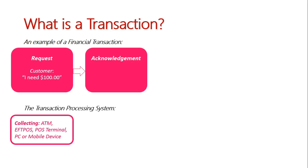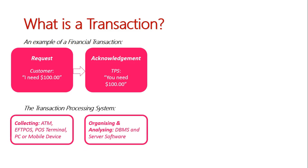This request needs to be acknowledged, and the TPS will basically say back to the customer, "You need $100, right?" It will then align this with the customer's account in some way, which is done through organising and analysing of a database management system, which is linked through server software.